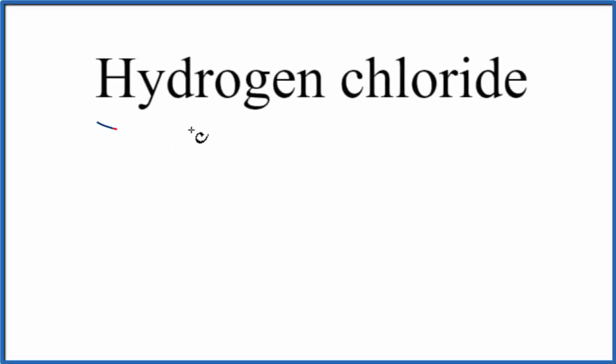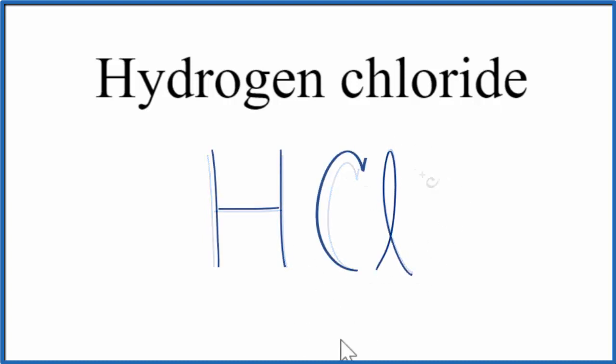To write the chemical formula for hydrogen chloride, first we'll write the element symbol for hydrogen, that's just H. And then chloride, that's from chlorine, so we write Cl. This is the formula for hydrogen chloride, HCl.